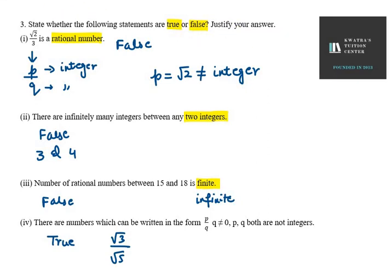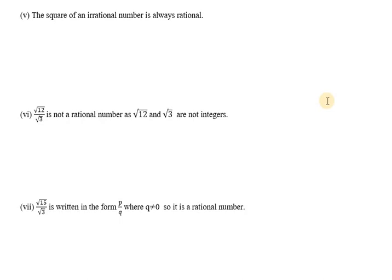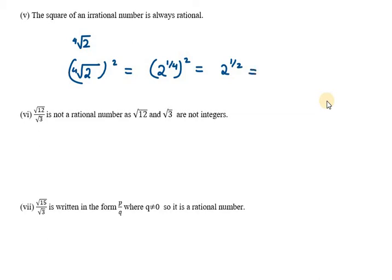Part 5: the square of an irrational number is always rational. If we take an irrational number like the fourth root of 2 (2^(1/4)) and square it, we open the bracket: it becomes 2 raised to power 1/4, then raise to power 2 — multiply the powers — and we get 2 raised to power half, which is under root 2, which is not a rational number. So the statement is false.